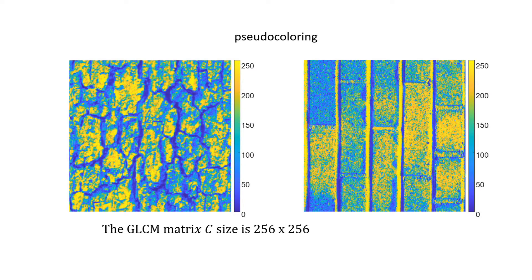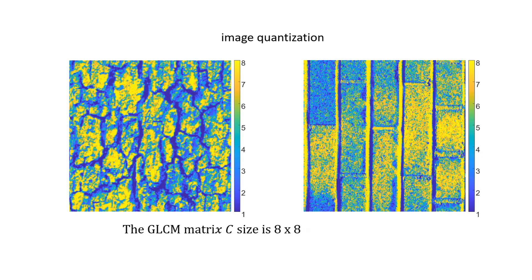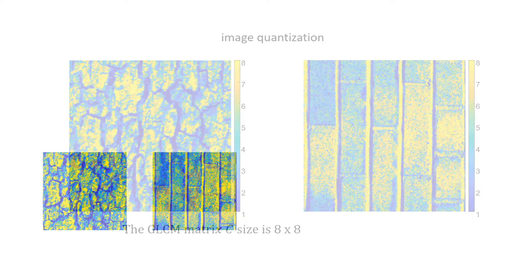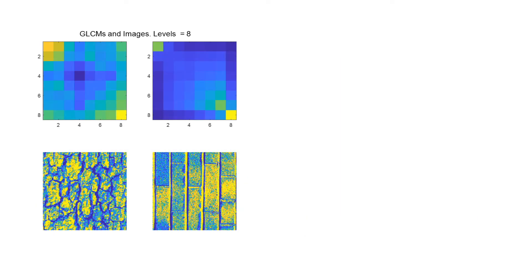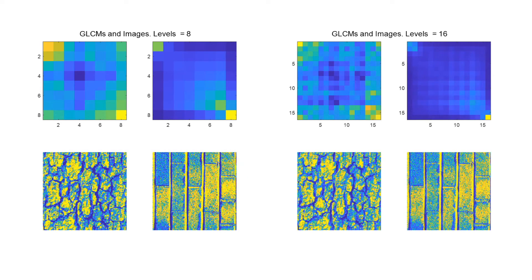If we analyze the images with all possible intensity gray level values we will end up with GLCM matrices of size 256 by 256. It is common then to quantize the image so that we can obtain matrices of lower sizes in order to speed up the computations. Rather than showing examples of these matrices with numerical values, we will be showing them as images.